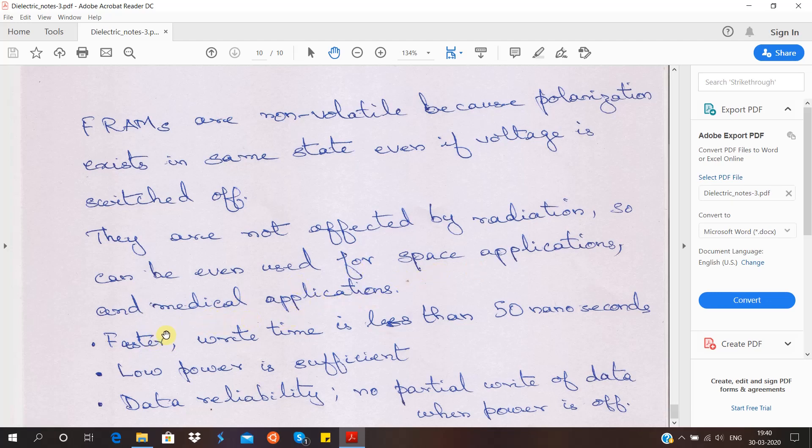Further advantages: these FRAMs are faster. The writing time is very fast. Then low power is sufficient. Just a small amount is sufficient to create that spontaneous polarization. And there is no loss of data when there is no power. So that's all with this unit of dielectric. In the next lecture, I will be coming up with some numericals which the students can practice. Thank you so much. See you in the next lecture.